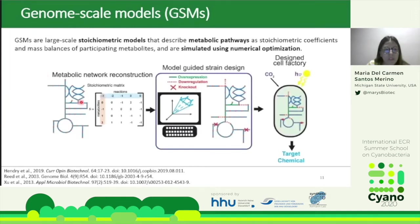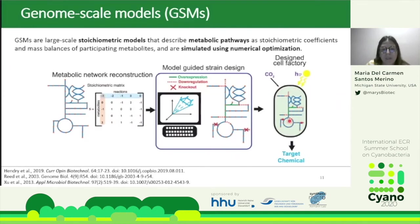In other words, this represents the metabolism of our cyanobacteria as a matrix where rows represent reactions and columns represent metabolites, with stoichiometric numbers describing the reactions. Using different constraints and algorithms, we can identify which genes to over-express, down-regulate, or knock out. Once these modifications are identified in silico, they can be applied in vivo to manipulate the genome and increase production of the target chemical.